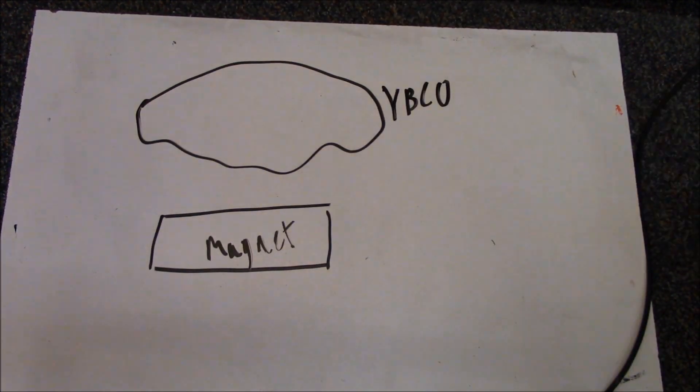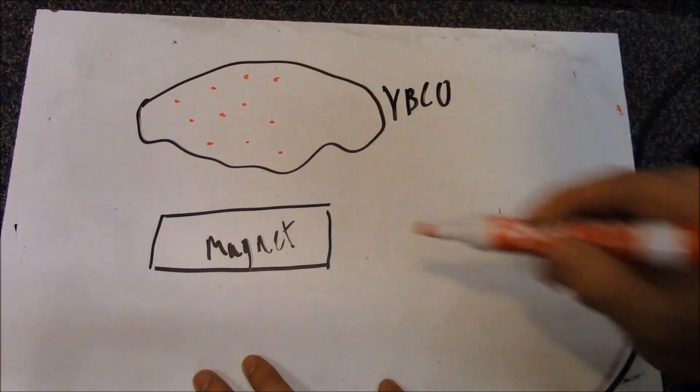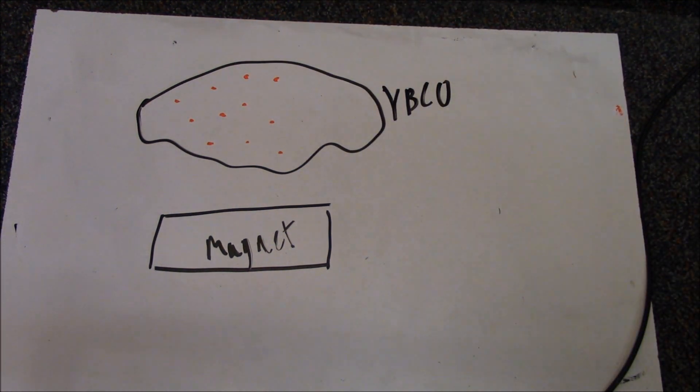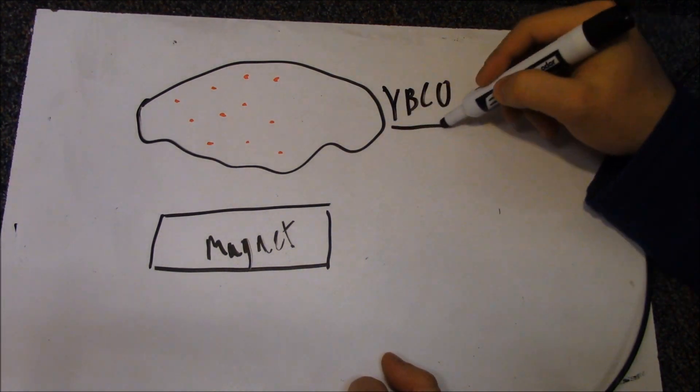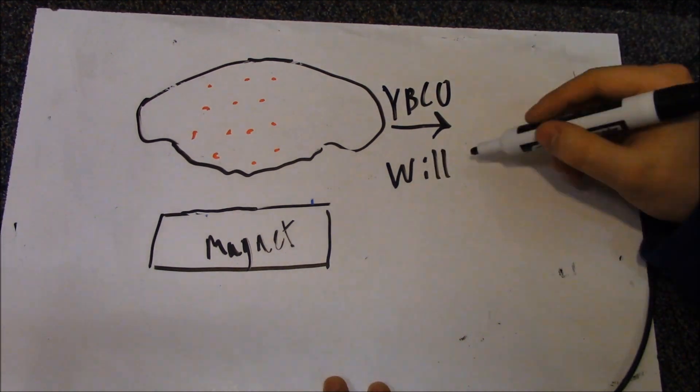To understand how this affects levitation, here is an example. Let's say I have a wide piece of YBCO floating over a small magnet. The vortices will form above the magnet. What will happen when we move the magnet? Will the vortices move with the YBCO?